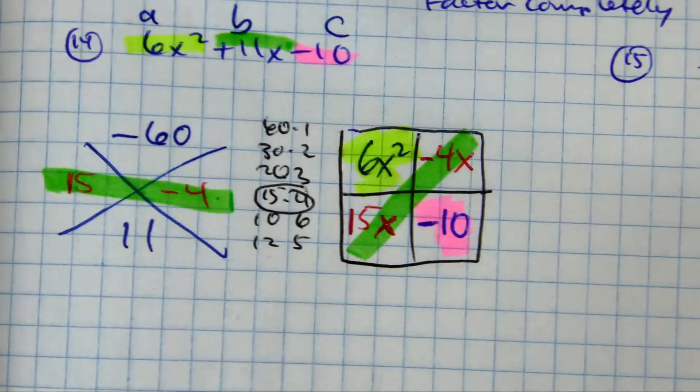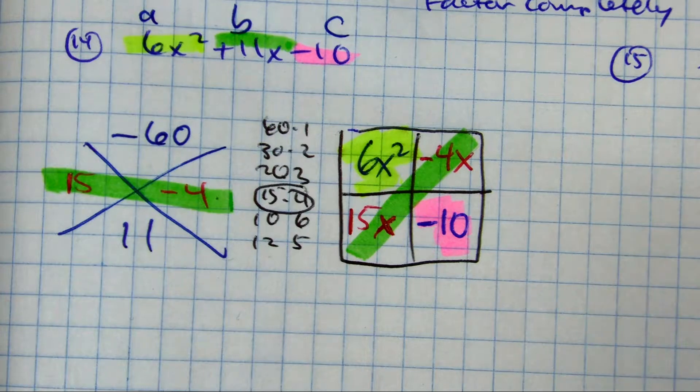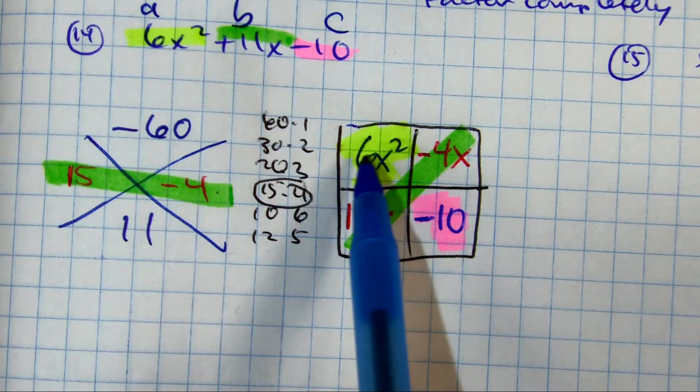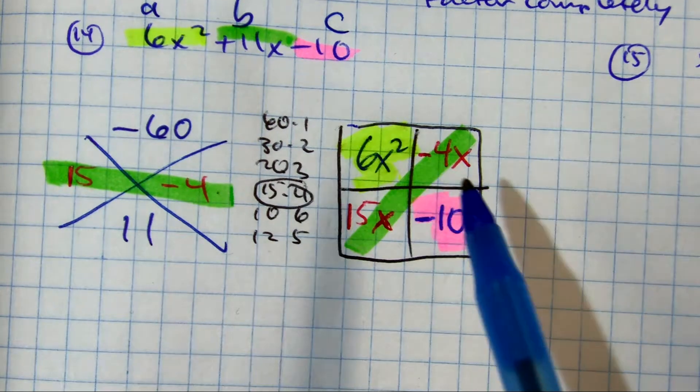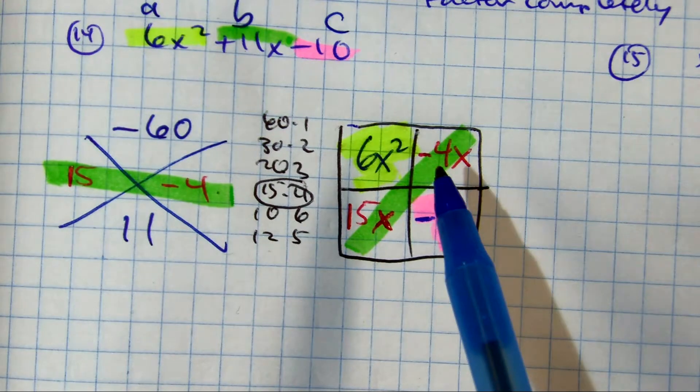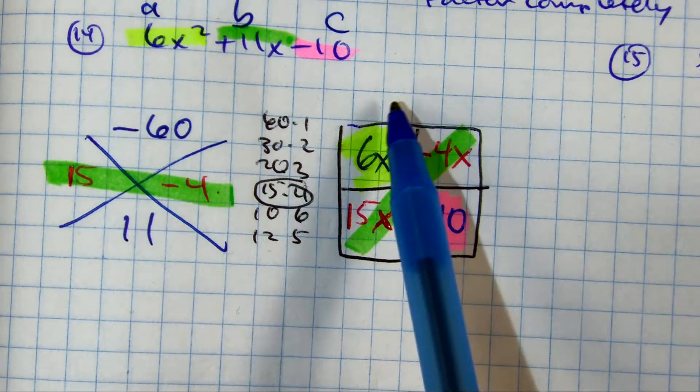All right, Sophie. Here's the question. To get a 6X squared, I'm going to have to multiply 2 and a 3. The question is, where do I put the 2? Should I put it here on top or to the left?